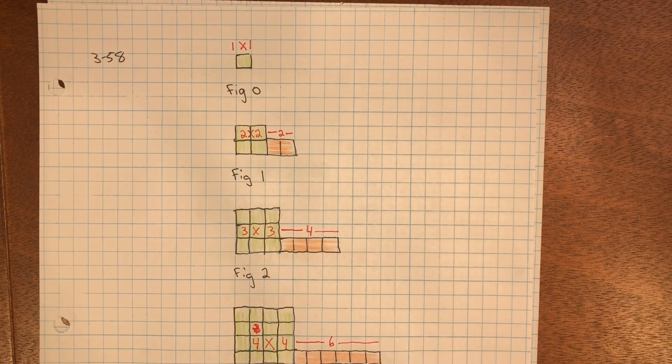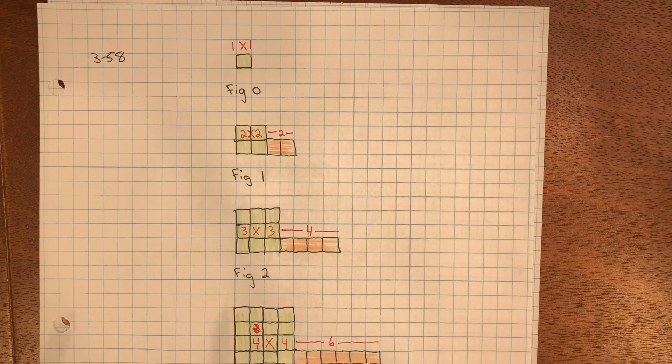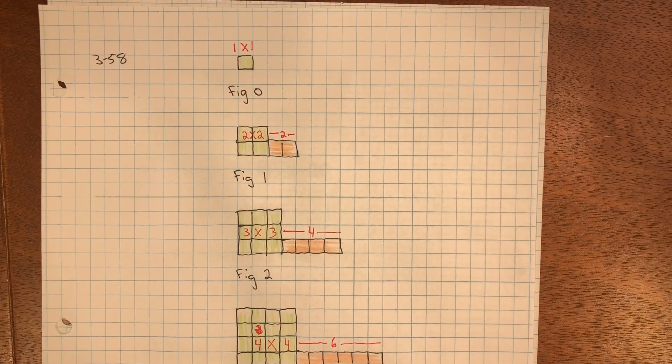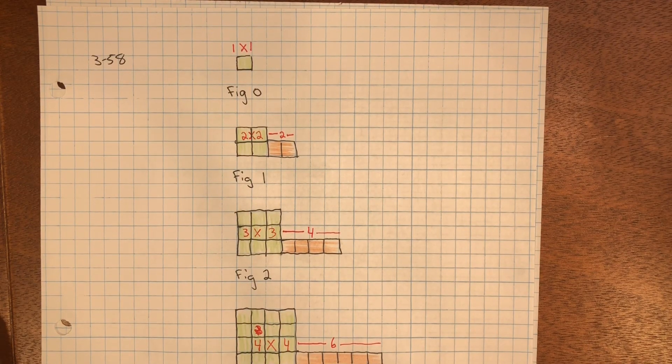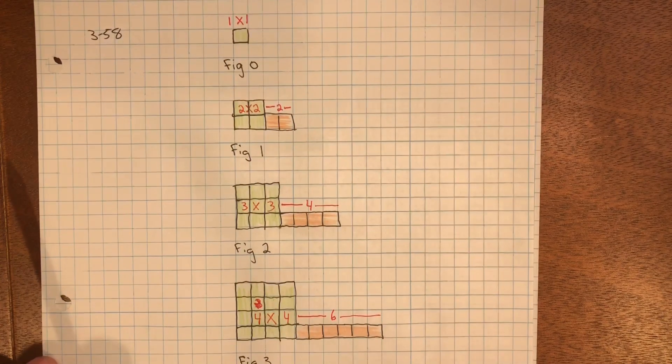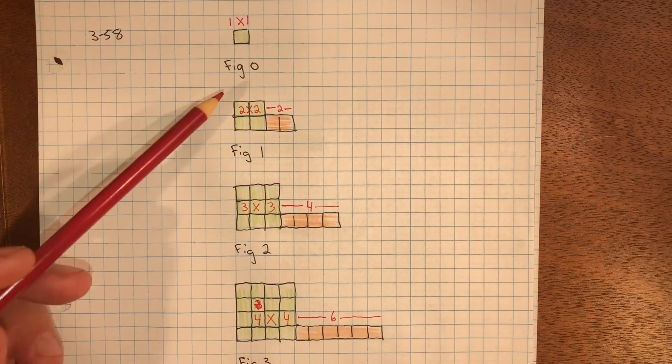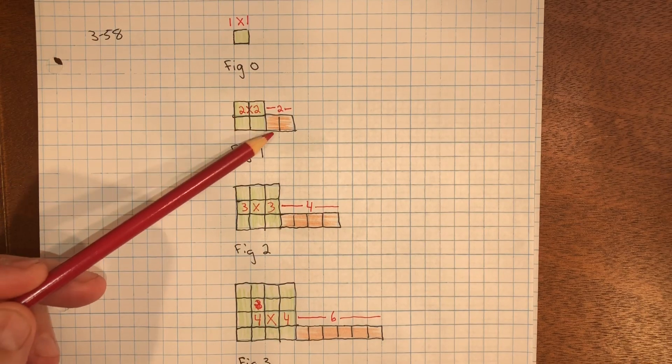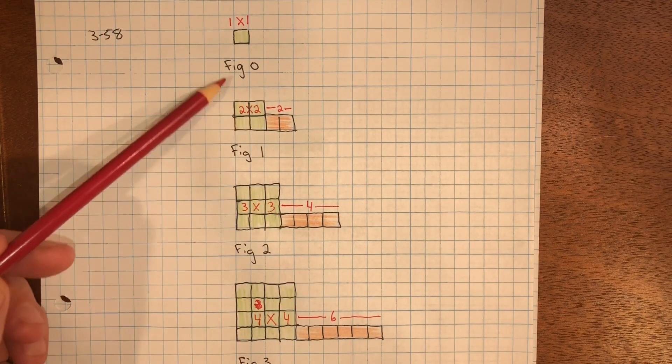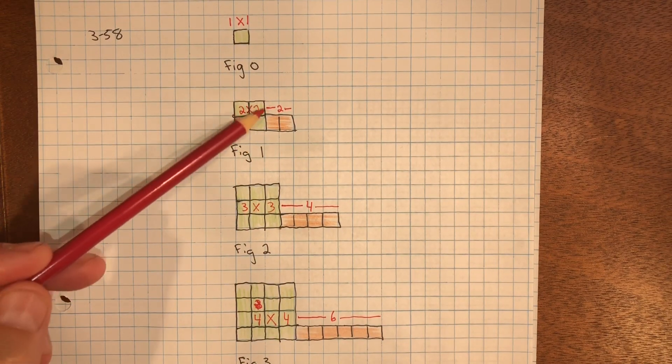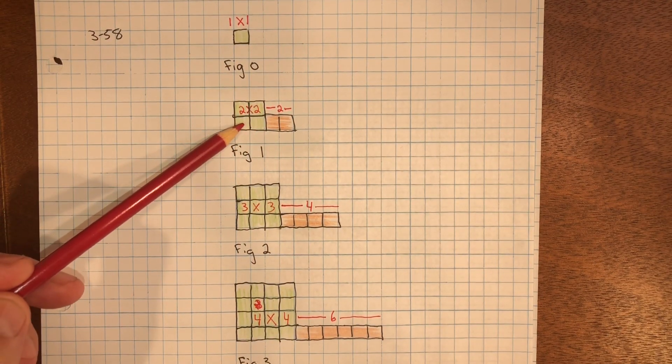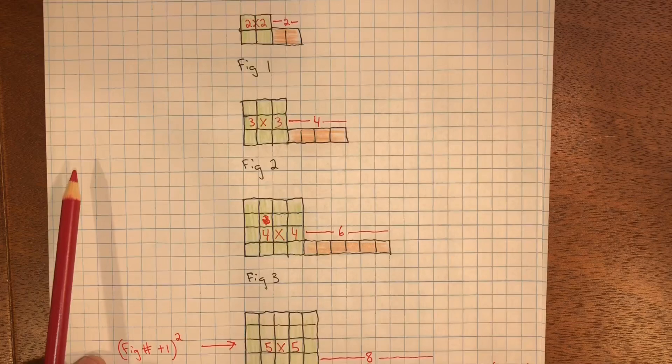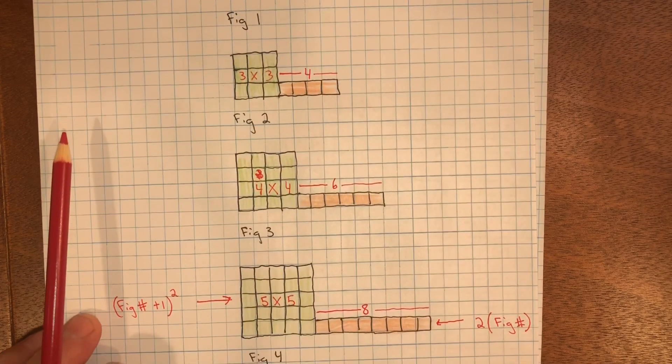In problem 358, you need to draw figure 0 and figure 4 for the pattern that was given, and then describe figure 100 in detail. When I have these types of problems, I like to color the squares in so I can see exactly what's going on. I can see the pattern. So I colored in this square and figure 1 is a 2 by 2. Figure 2 is a 3 by 3. Figure 3 is a 4 by 4.